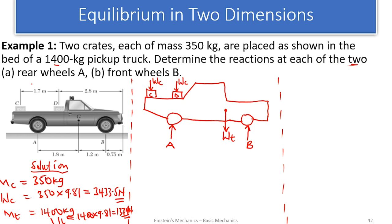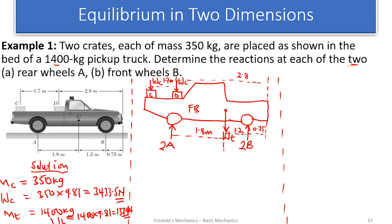There is a reaction at A and a reaction at B. Remember the rear wheels are two — since we see the front view, the other is hidden. We're told to find the reaction at each of the two wheels, so we have 2A at the rear and 2B at the front. Dimensions: C to D is 1.7 m, D to the end of the truck is 2.8 m, from B is 0.75 m, then 1.2 m, and from A that is 1.8 m.